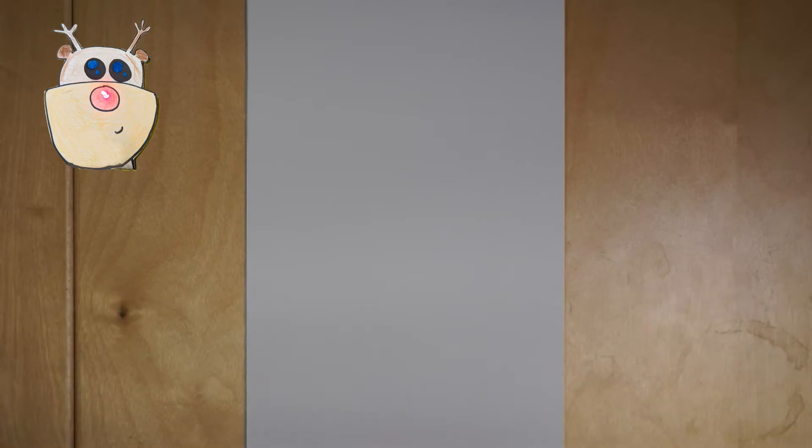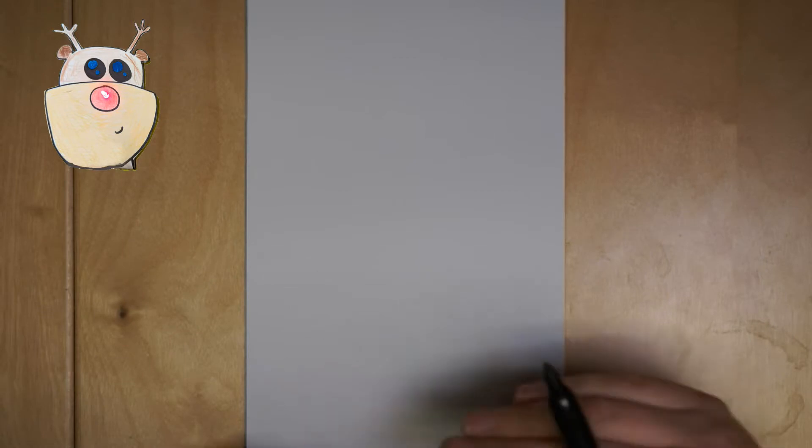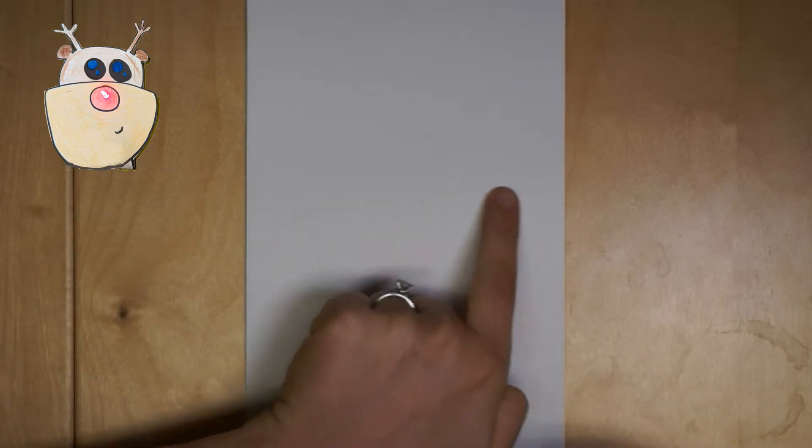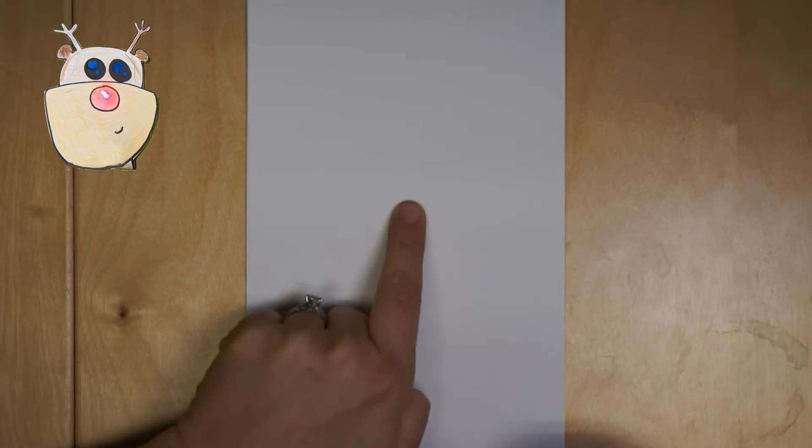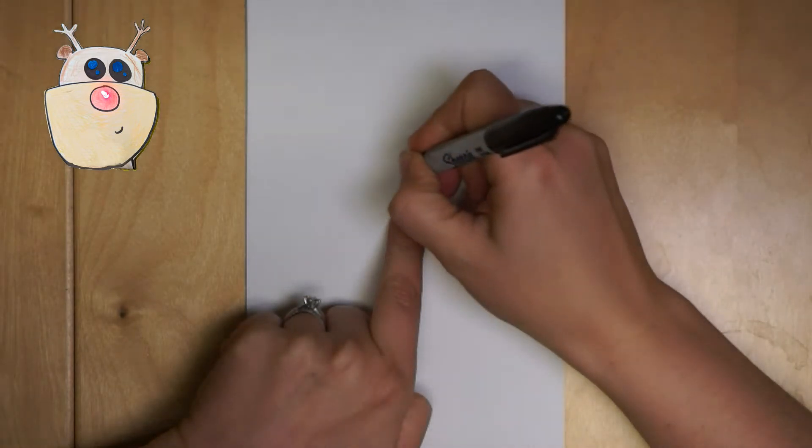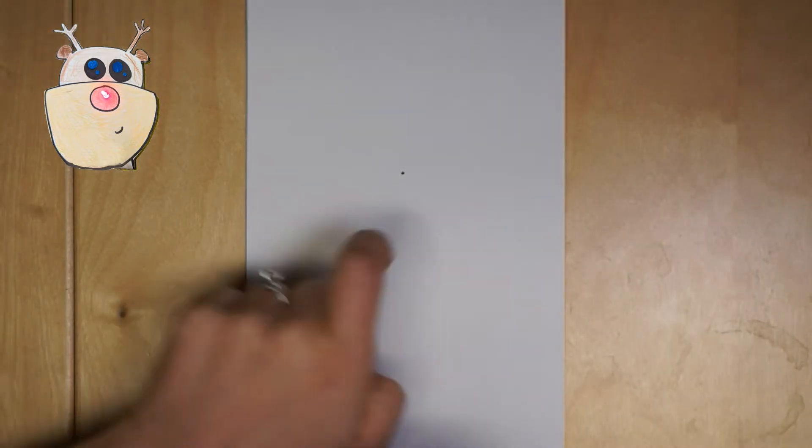So let's get started drawing our little Rudolph. The first thing I like to draw is where we're going to put our little LED. We're going to find about the halfway point of the paper, go to the middle of that point and just a little bit above, just a dot. And that's where our red LED is going to end up.